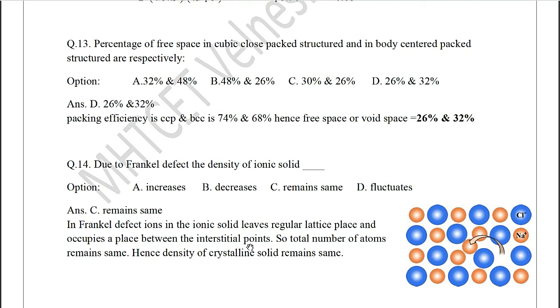Remember that in Frenkel defect, ions in the ionic solid leave regular lattice place and occupy a place between the interstitial points. This is because there is considerable difference between the size of anion and cation. So small cations can sometimes shift to some interstitial points. But if you check, total number of atoms remains same in this structure. So that means density of crystalline solid remains same.